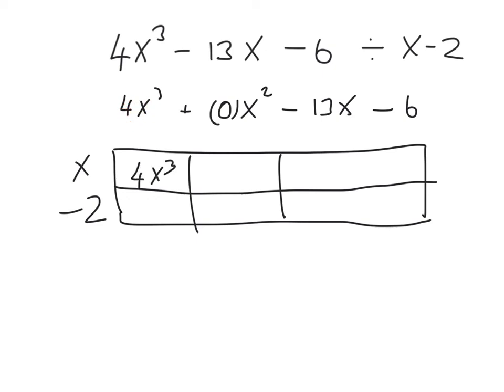First thing we do is divide the x into the 4x cubed to get 4x squared. Then we multiply the 4x squared by the minus 2 to get minus 8x squared. Now we ask ourselves what do we need to add to minus 8x squared to bring it up to 0x squared. That means we have to add plus 8x squared. Again we commence the loop.